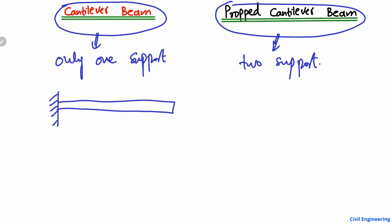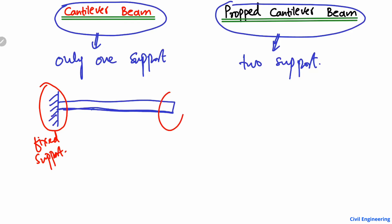This beam has a certain depth and is provided with only one support. On the left side, we call it a fixed support. So where only one fixed support is provided on one end of the beam, the other end of the beam is free.